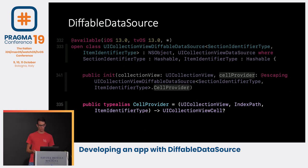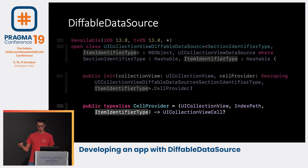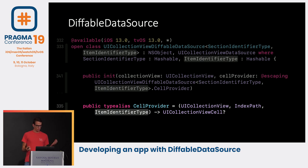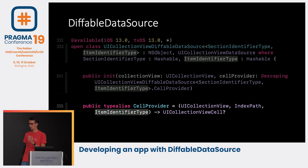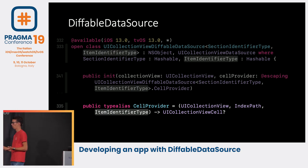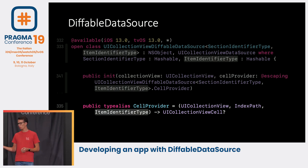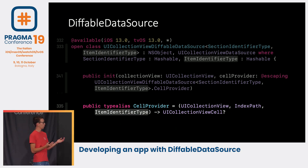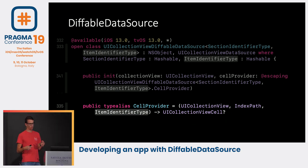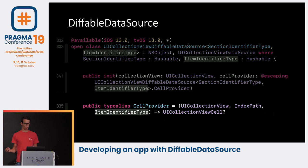But the weird thing is we can only specify one type. So if we have a data source with 10 different cells all needing their own view model, we're kind of stuck. We can resolve this by making an enum with associated types containing all your different cells and view models, then specify this enum to your data source so you can switch over them and still use the nice new API.